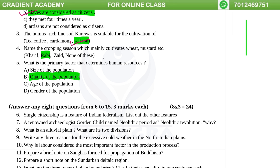Name the cropping season which mainly cultivates wheat and mustard. That is the Rabi season.